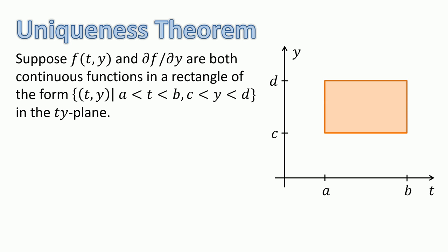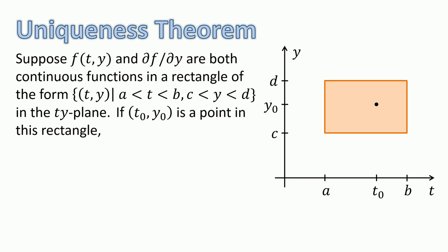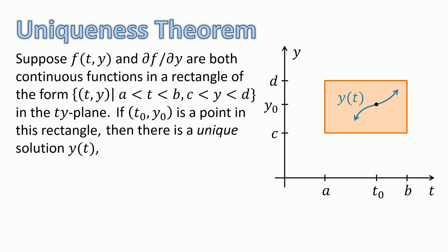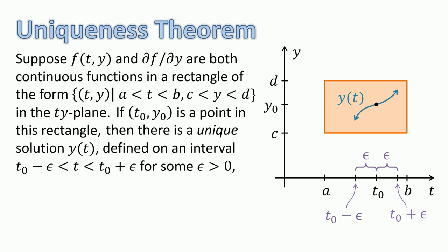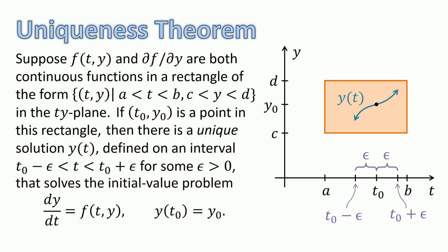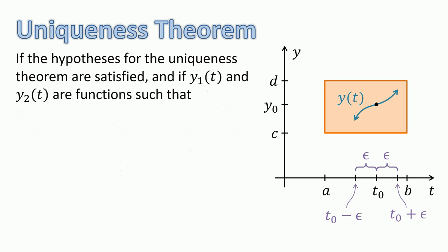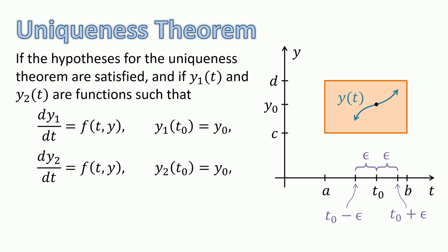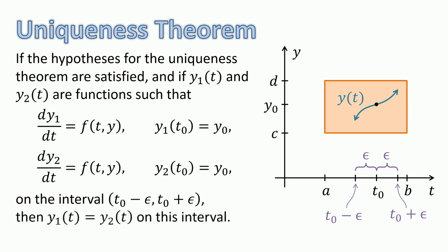Second, let's talk about uniqueness. Suppose f(t, y) and the partial derivative of f with respect to y are both continuous functions in a rectangle containing all points (t, y) with t between a and b and y between c and d. If (t0, y0) is a point in this rectangle, then there exists a unique solution y(t), defined for all t from t0 minus epsilon to t0 plus epsilon, that solves the initial value problem. In other words, if you think there are two functions y1 and y2 that both satisfy the initial value problem on that interval, then in fact y1 equals y2 on this interval.